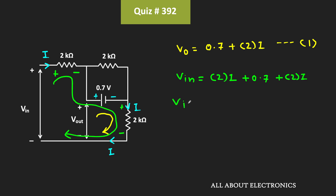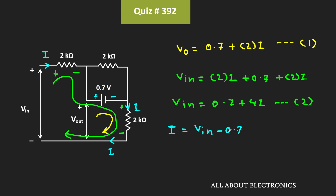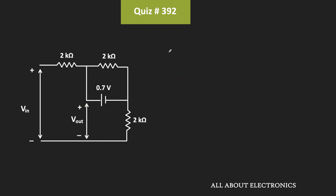Similarly, we can also write the KVL equation for the outer loop. If we write the KVL equation, then Vin is equal to 2kΩ times I — the voltage drop across the first 2kΩ resistor — plus 0.7V, plus 2kΩ times I for the second resistor. That means Vin is equal to 0.7 plus 4I. This is our second equation. From the second equation, current I is equal to (Vin minus 0.7) divided by 4. Substituting into the first equation: Vout is equal to 0.7 plus 2 times (Vin minus 0.7) divided by 4.